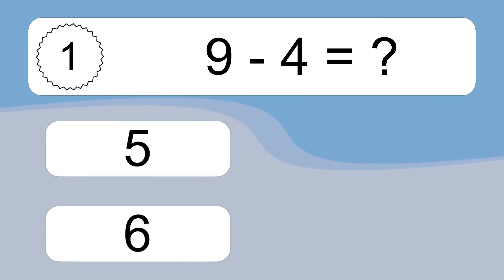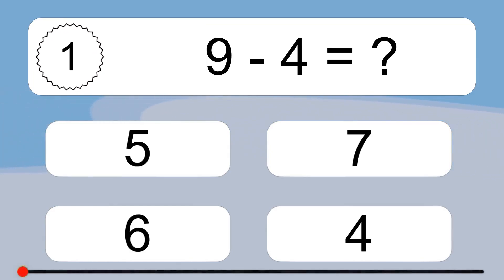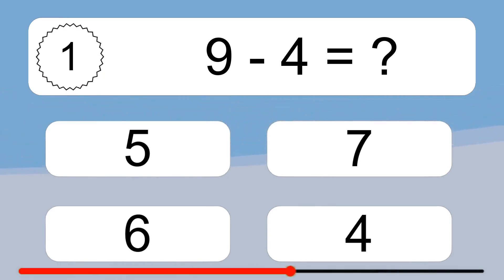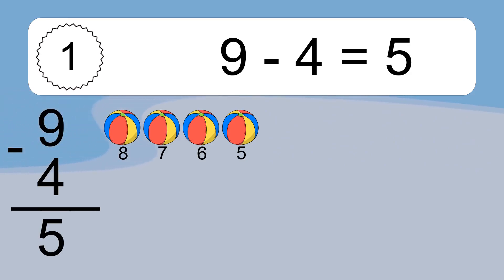9 minus 4 equals what? 9 minus 4 equals 5. Let's count it: 8, 7, 6, 5.